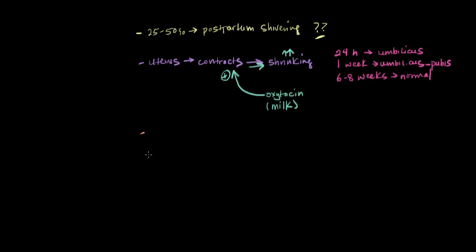Now with regards to what's going on on the inside of the uterus, remember that the placenta attaches itself to the decidua basalis. The placenta is attached to the decidua basalis of the uterus. And that decidua basalis, that lining of the uterus, is left behind after the placenta separates.